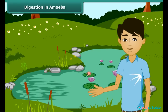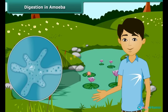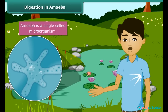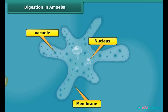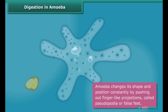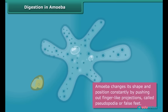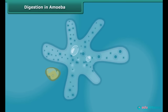You will be surprised to know that some organisms do not have a mouth or digestive system, yet they digest food. One such organism is amoeba, found in ponds. It is single-celled and cannot be seen with the naked eye. It has a cell membrane, a rounded nucleus, and vacuoles in its cytoplasm.